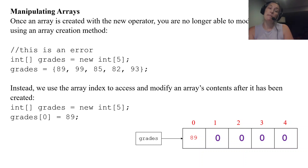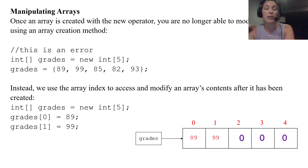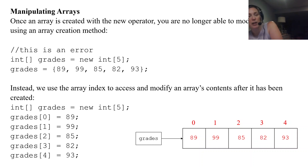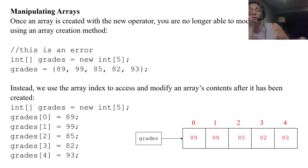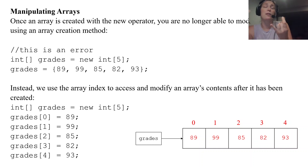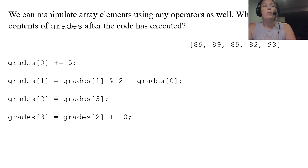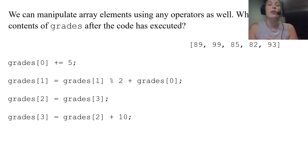To change index one to 99 you write grades[1] = 99, and so on for indices two, three, and four. That's how you individually put data into an array after it's already been created. Whenever you want to access or modify elements, you use the array index.